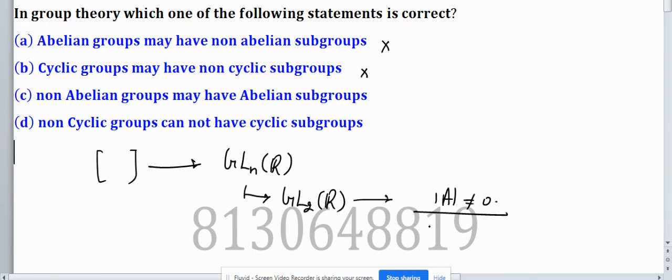So non-abelian groups may have abelian subgroups. This statement is true.